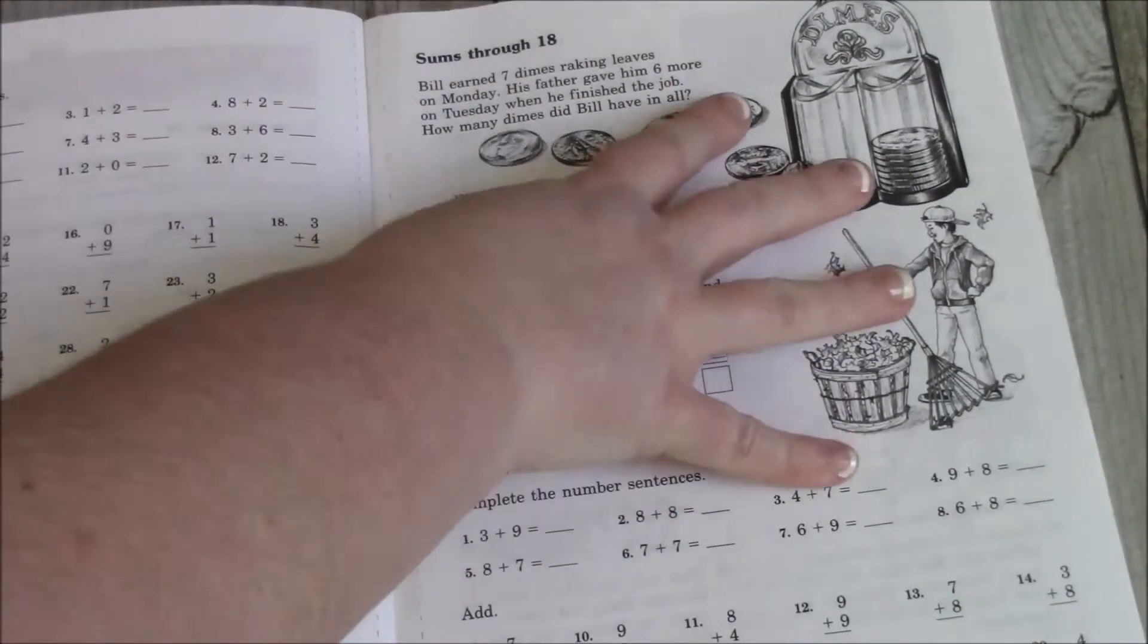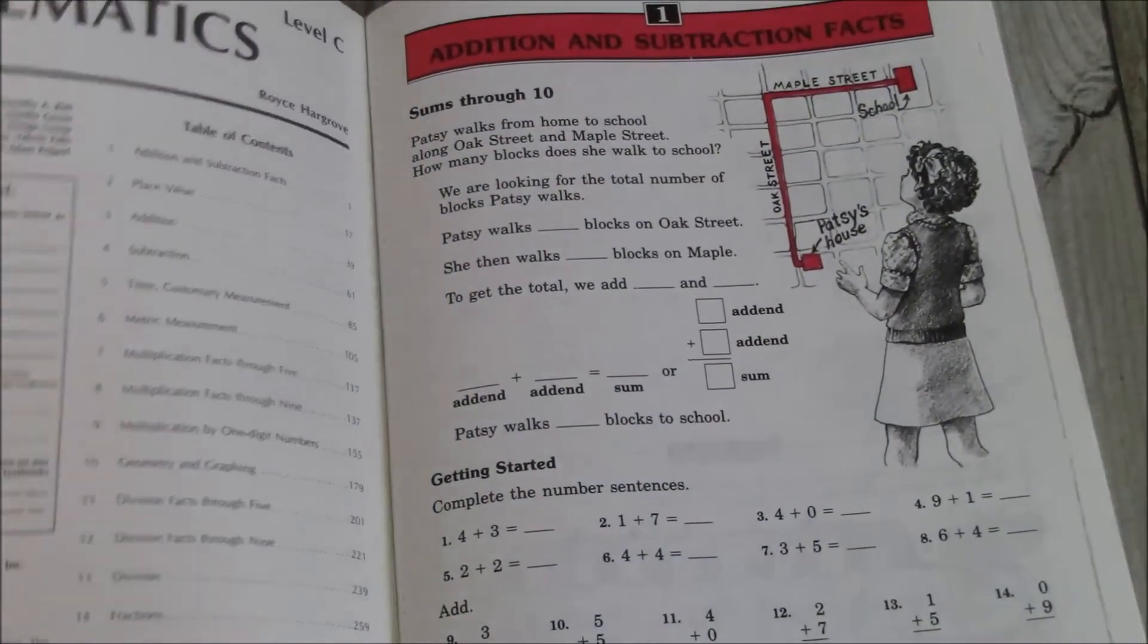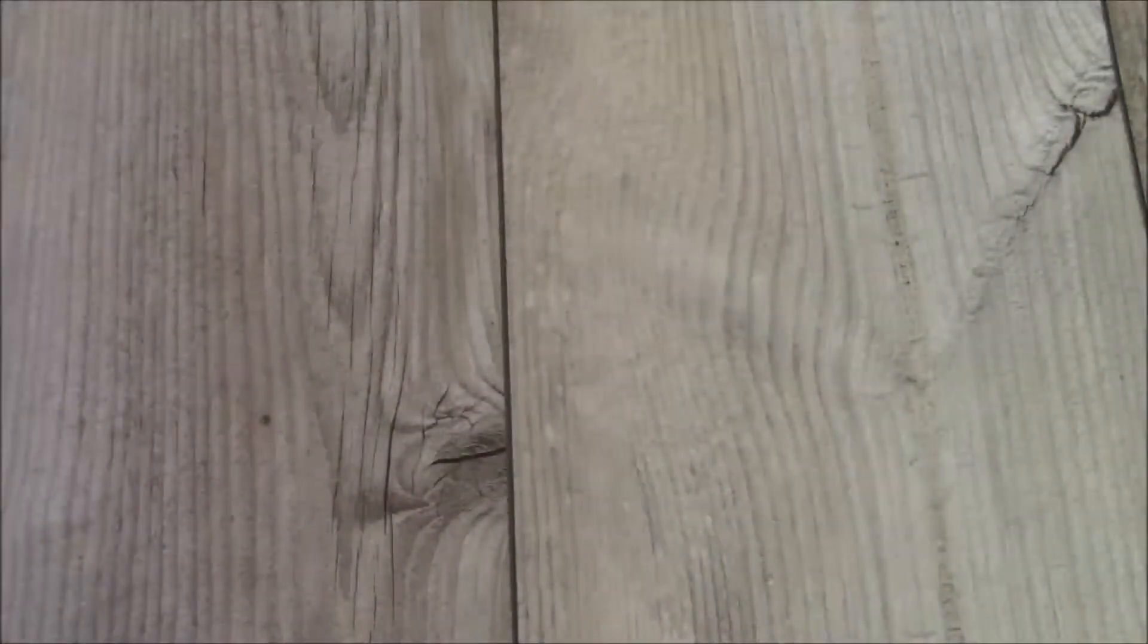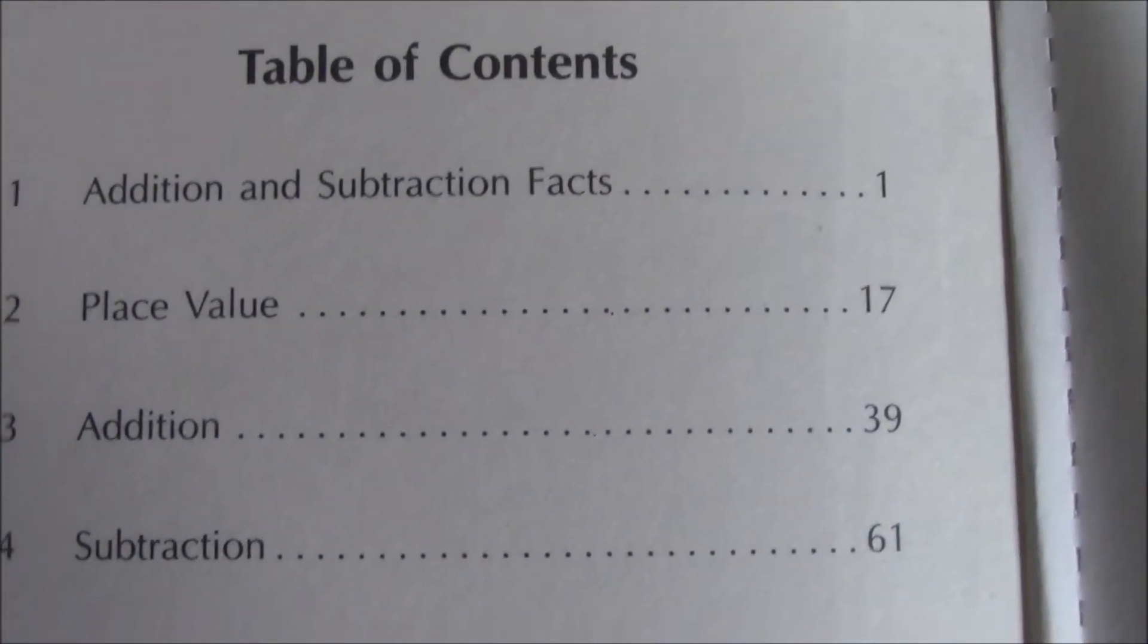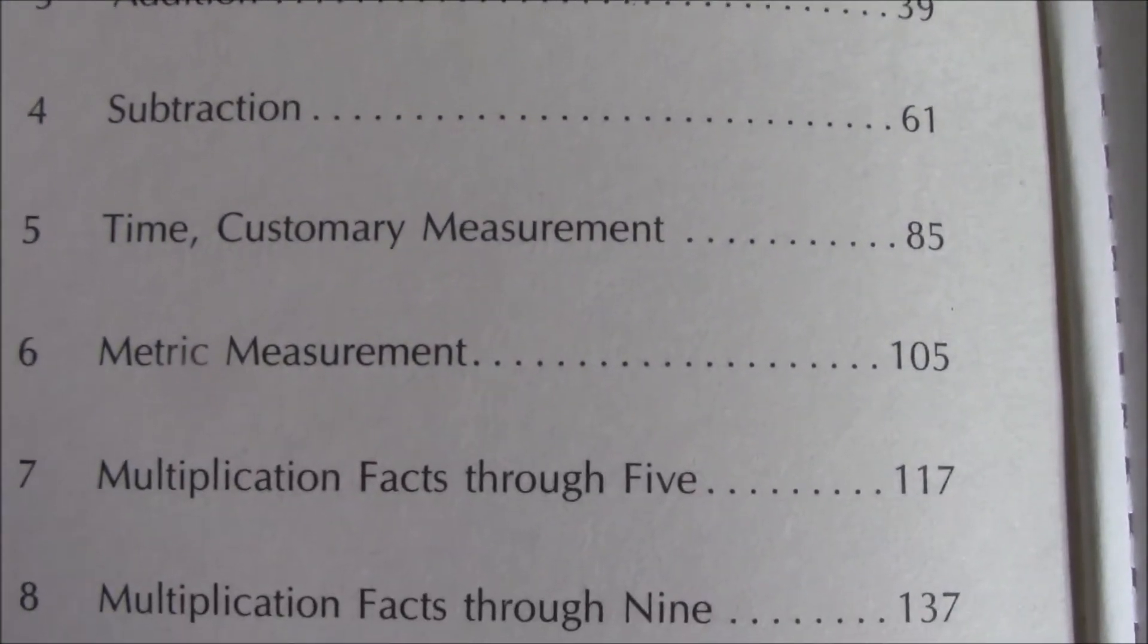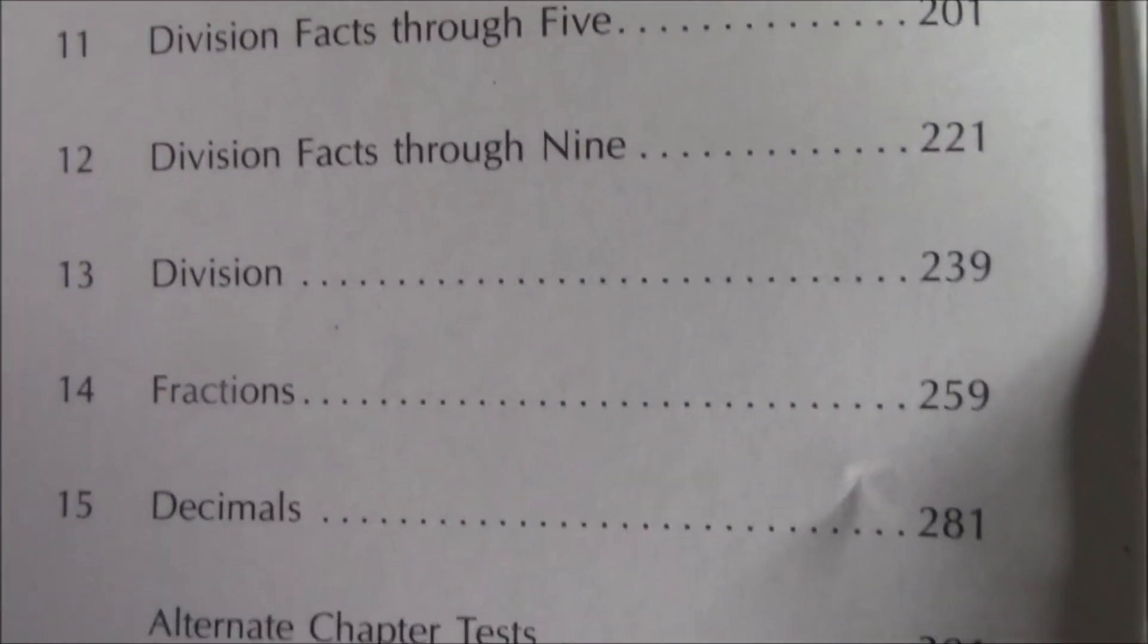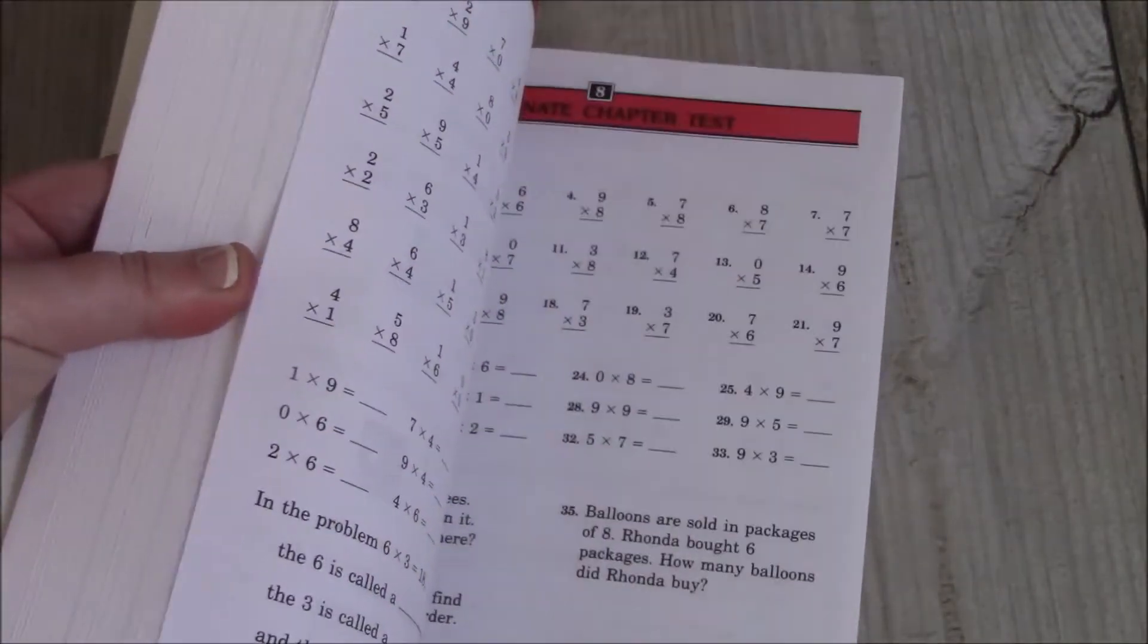All right. Now, again, I don't want to do a complete flip through of this. As you can see, we've got some more detailed pictures, black and white. But I don't want to flip through each chapter. Again, it'll just make for a very long video. So, these are some of the things that we will be learning in this book. We have alternate chapter tests in the back to kind of keep our brain sharp.